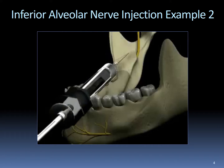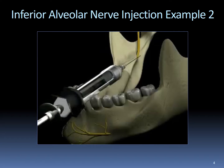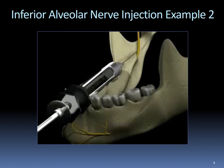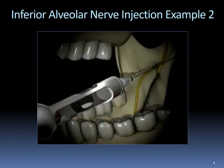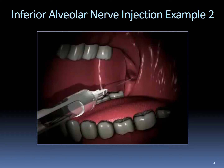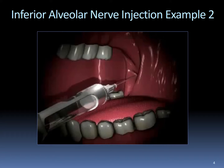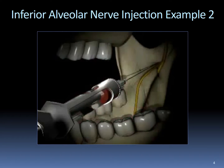If you contact bone too soon — significantly less than 25 millimeters — you will need to redirect the syringe using the indirect technique. Withdraw the syringe slightly, move the barrel more medially over the contralateral canine or incisors, and advance again until bone is contacted. If you do not contact bone after 25 millimeters and the needle is almost buried, redirect by withdrawing somewhat — not completely — and move the barrel more laterally and advance again until bone is contacted. Repeat this procedure as necessary. The nerve must be anesthetized before it penetrates the bone.